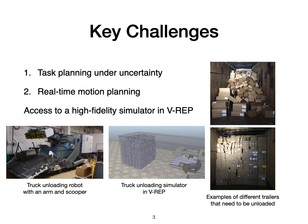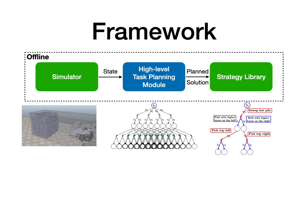To tackle these challenges, we have access to a high fidelity simulator in VREP of the truck unloading task. The question is: how do we utilize the simulator to achieve robust plans and obtain high throughput during execution on the physical robot? Our proposed framework presents a solution. We use the simulator offline to generate a wide variety of box configurations and use a task planning module to solve high level planning problems. The task planning module comes up with robust plans that ensure high throughput under uncertainty. The resulting plans, which we call strategies, are stored in a library that can be accessed during online operation.